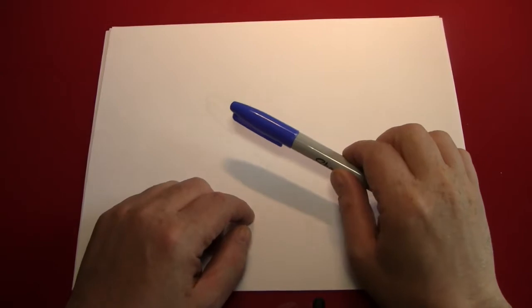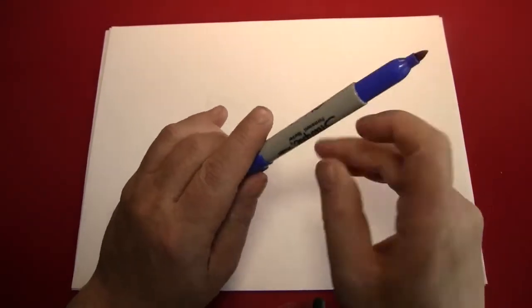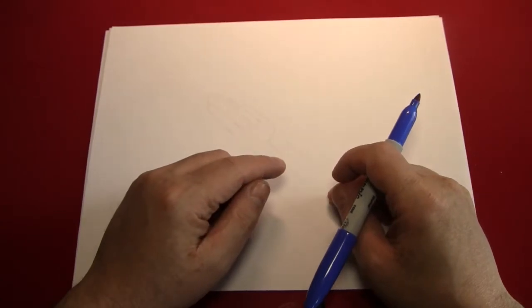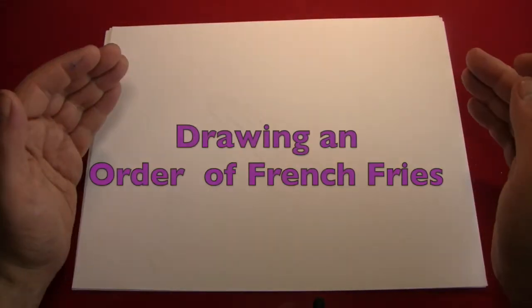Hello again, everybody. It's the Reverend Jay Goldstein and welcome to another episode of Doodling with Reverend Jay. In today's episode, we're going to be drawing an order of French fries.